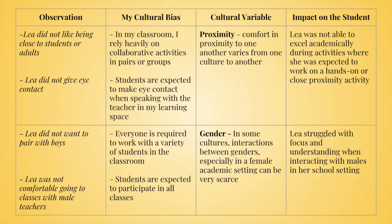It is so important to be critical of yourself and of your cultural biases when looking at intercultural competence in your classroom. As an example, Leah did not like being close to students or adults. In my classroom, I rely heavily on collaborative activities in pairs and groups — that is my cultural bias. The cultural variable here is proximity. The level of comfort that two people might feel in close proximity can vary from one culture to another. Leah was not able to excel academically during hands-on or close proximity activities, and therefore I needed to make an adjustment.